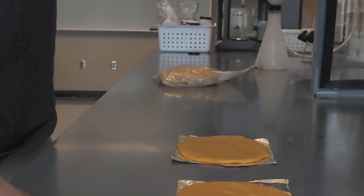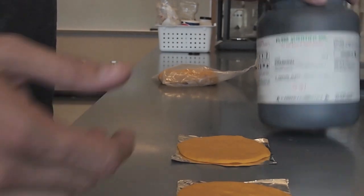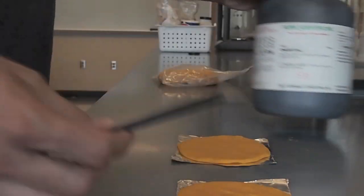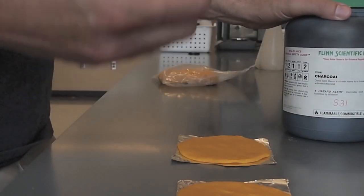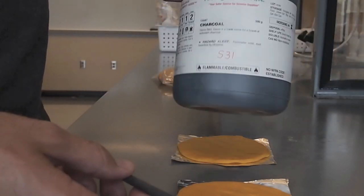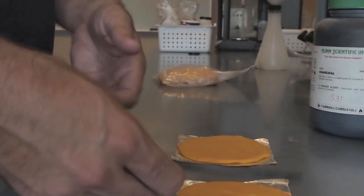And the cathode material in our case is going to be activated charcoal. You could really use any carbon source, you could use graphite, pencil leads would work. For example, here's a really, really big example of a pencil lead, this is just a graphite electrode, it's just essentially carbon, activated charcoal. This is a powdered form of activated charcoal. That's going to serve as our cathode material.